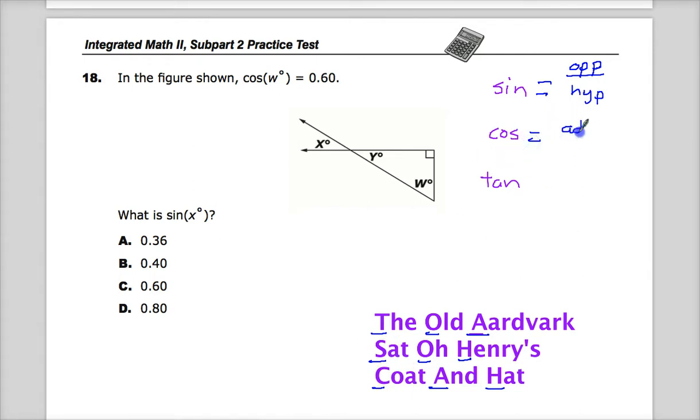The adjacent side is the side of the triangle that makes up the angle that's not the hypotenuse. So if you have angle w, the adjacent side would be here because it creates the angle w and is not the hypotenuse. Adjacent over hypotenuse. Tangent is opposite over adjacent.